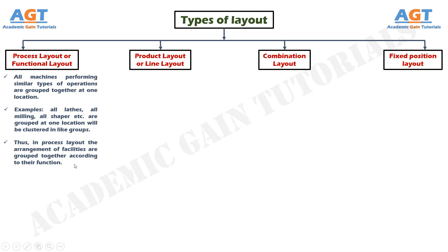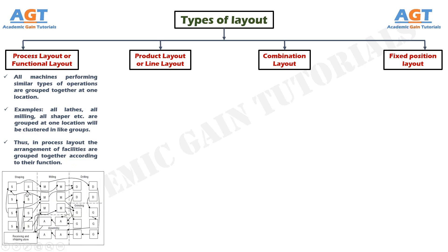In this figure of the process layout or functional layout, we can see that all the drilling machines, milling machines, lathe machines, and shaper machines are grouped together separately in particular areas. They are not arranged according to the sequence of operations for a product.